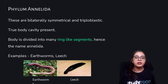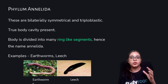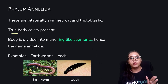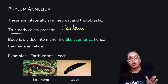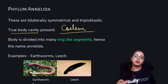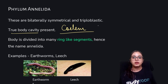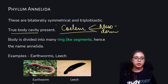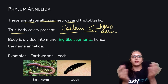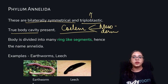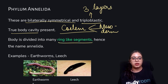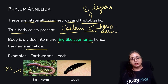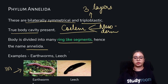Annelida is where we finally come to organisms where a true coelum is present, and the mesoderm is giving rise to the coelum. These are bilaterally symmetrical and triploblastic with all three layers present. The body in Annelida is divided into ring-like segments, as you can see in the structure of an earthworm. Hence the name Annelida. Examples are earthworms and leeches.